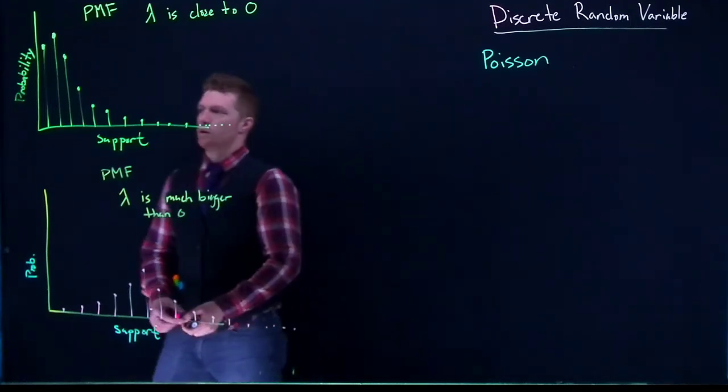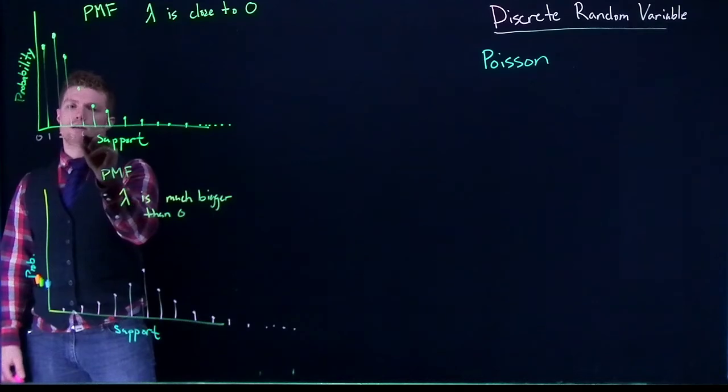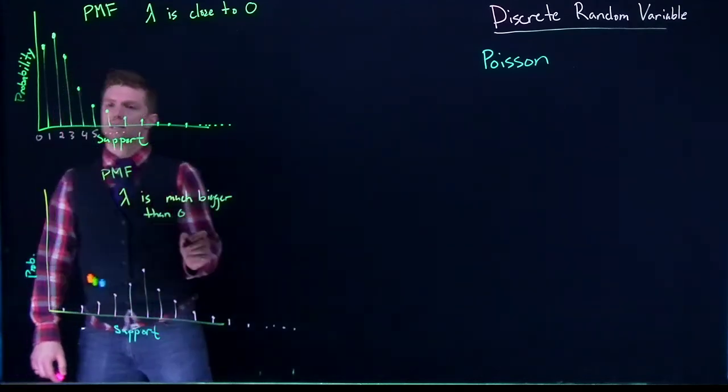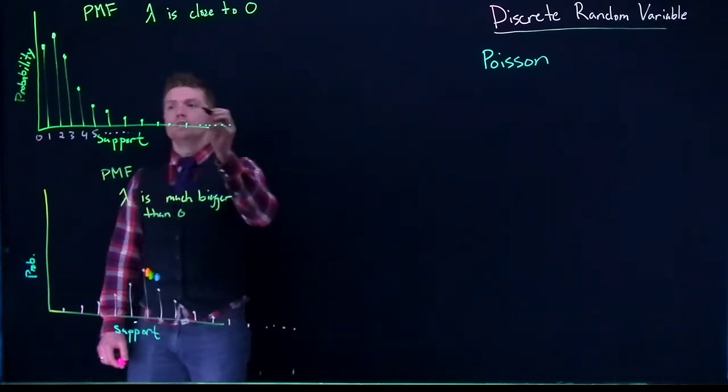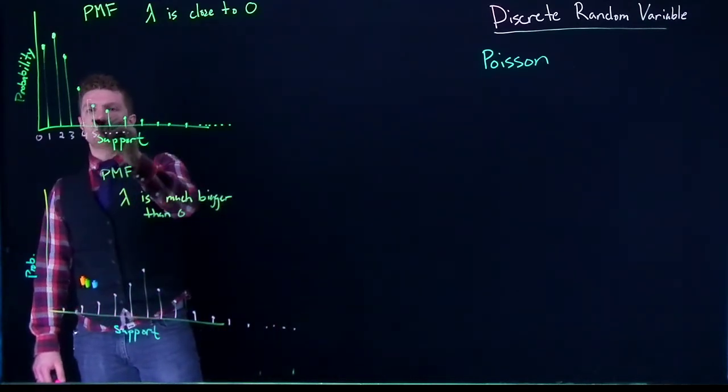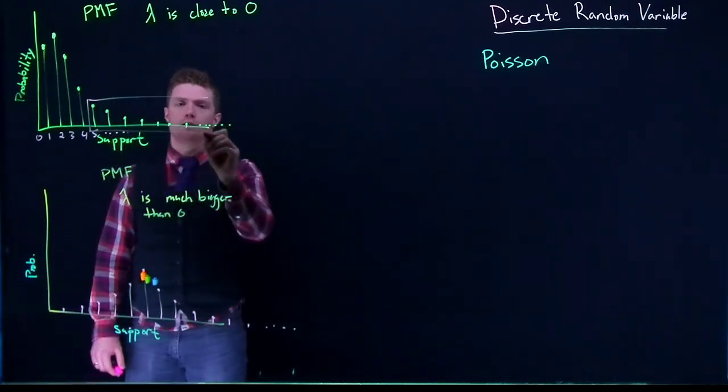And similarly, we could ask these questions again. So if this is zero, one, two, three, four, five, going on down. I can ask what's the probability of being greater than five, right? Well, visually, what it is, is it's the sum of all of those guys for being greater than five.